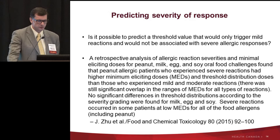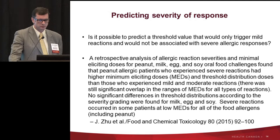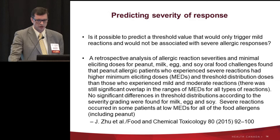A 2015 publication by Zuo looked at eliciting doses for peanut, milk, egg, and soy. For peanut, patients who experienced severe reactions had higher minimum eliciting doses and threshold distribution doses than those who experienced mild or moderate reactions. However, they found no significant differences in threshold distributions by severity grading for milk, egg, or soy, and noted that severe reactions occurred at low minimal eliciting doses for all food allergens including peanut.